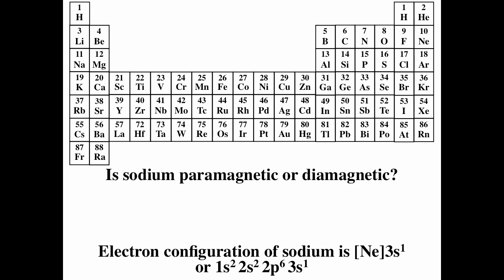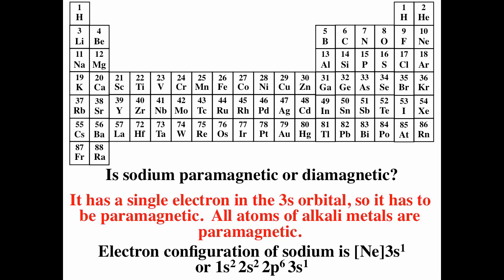You could also be asked: is sodium paramagnetic or diamagnetic? There is one electron in that s orbital, so it is unpaired — sodium must be paramagnetic. All alkali metal atoms are paramagnetic. The alkali metals are that first column of the periodic table.